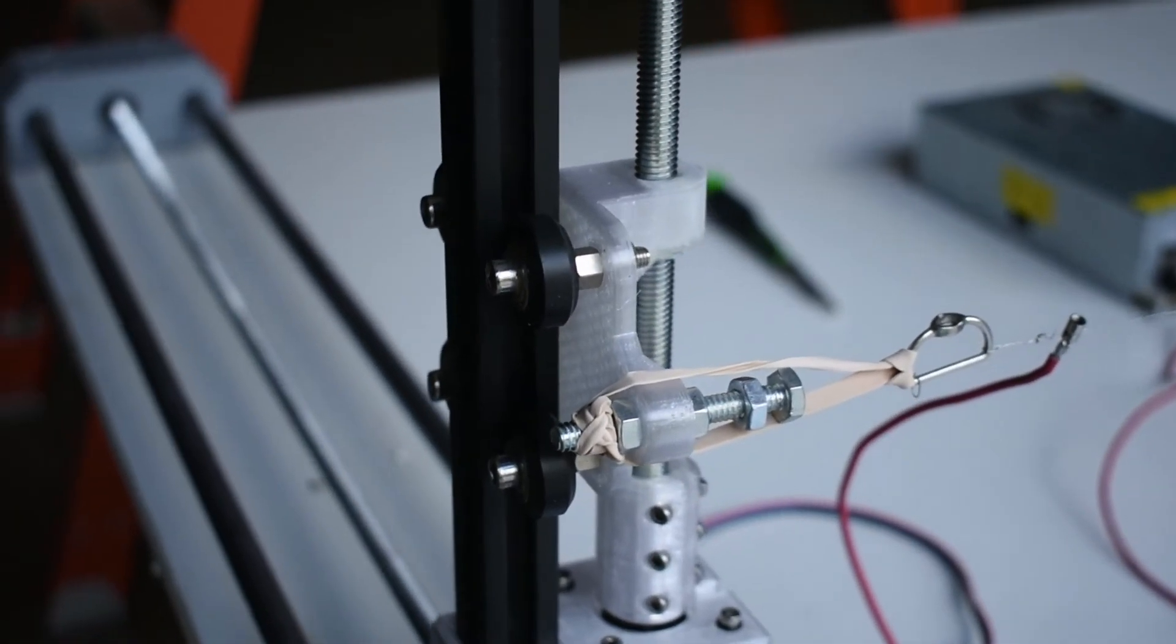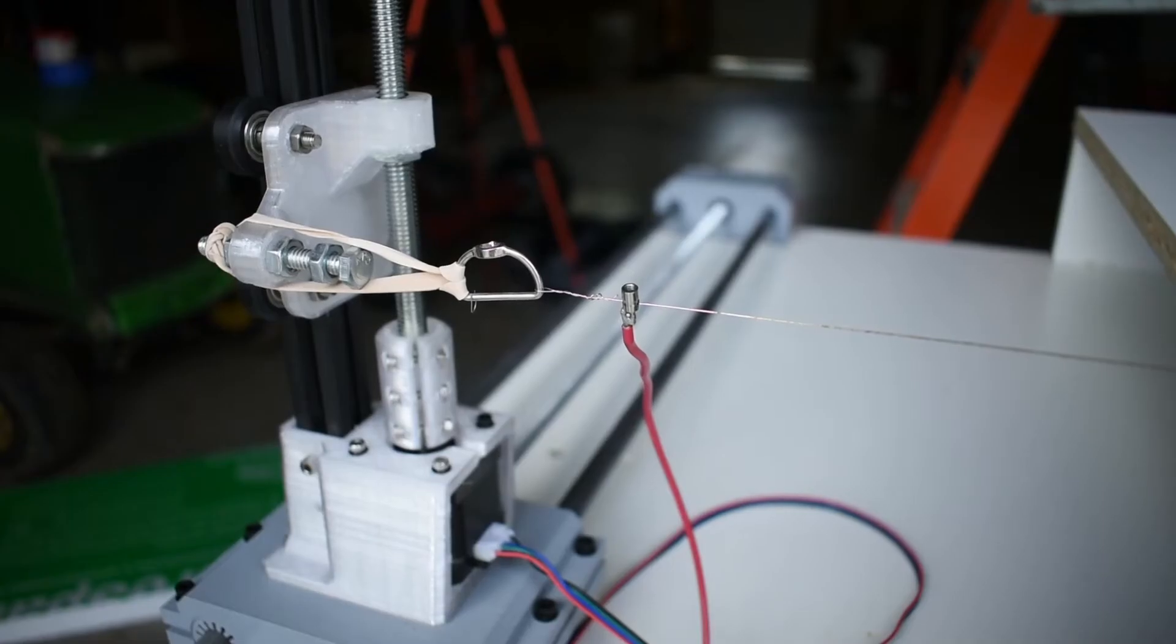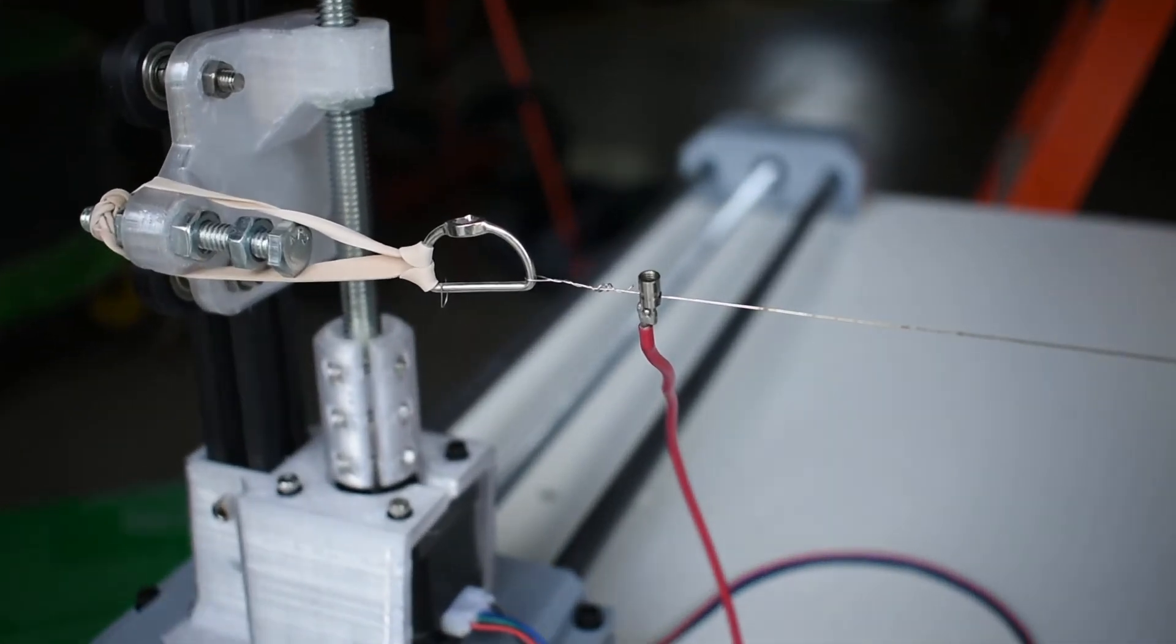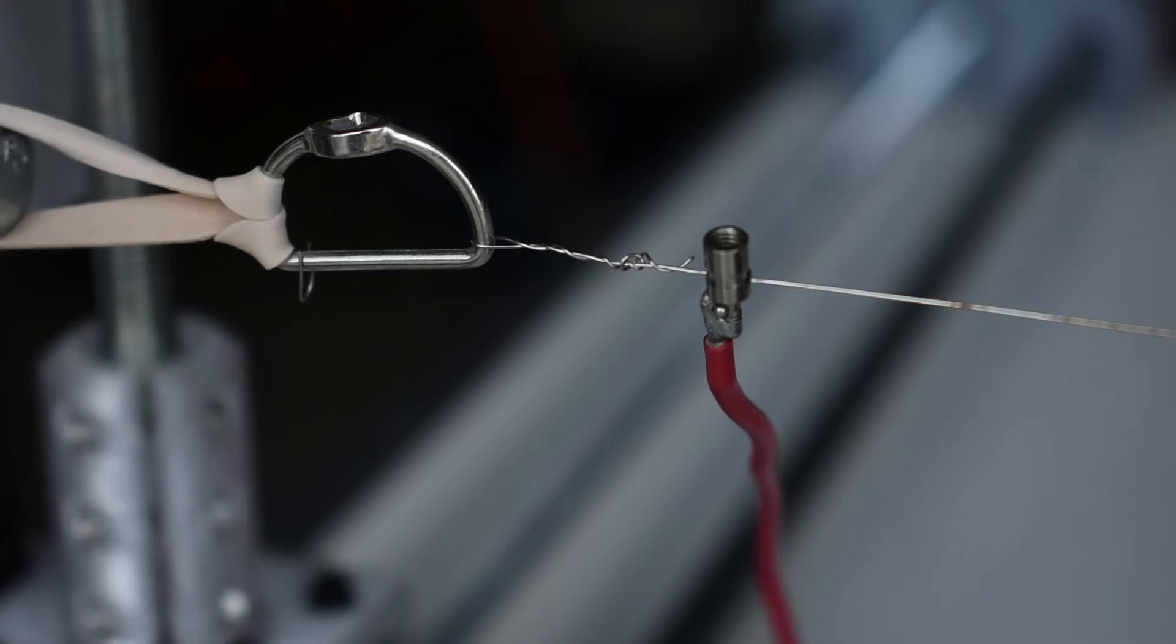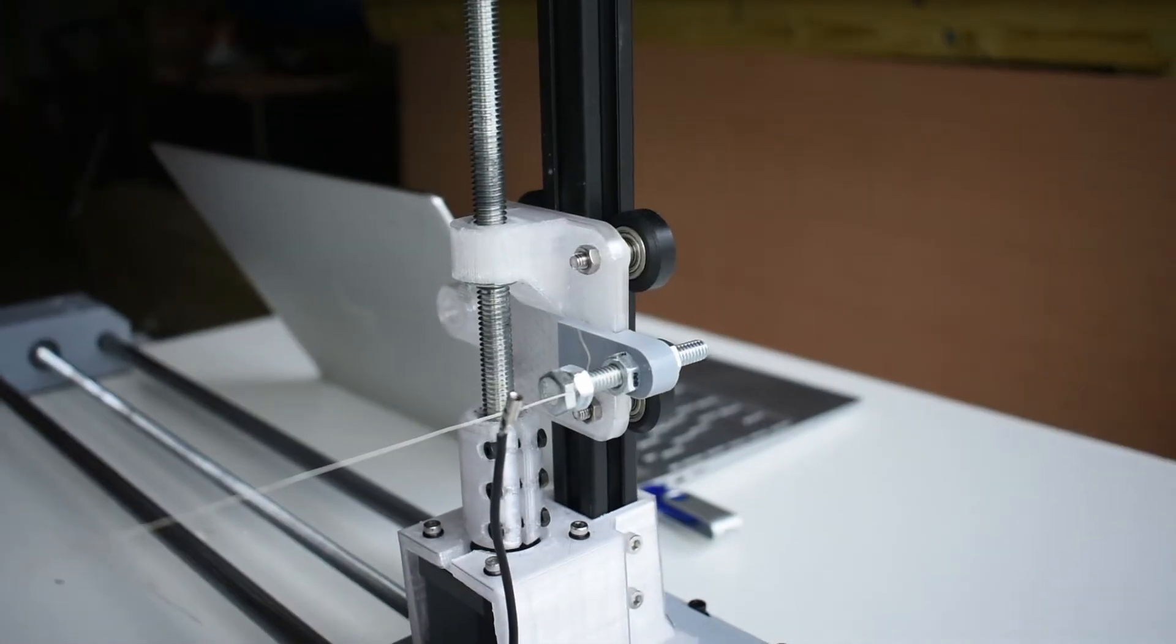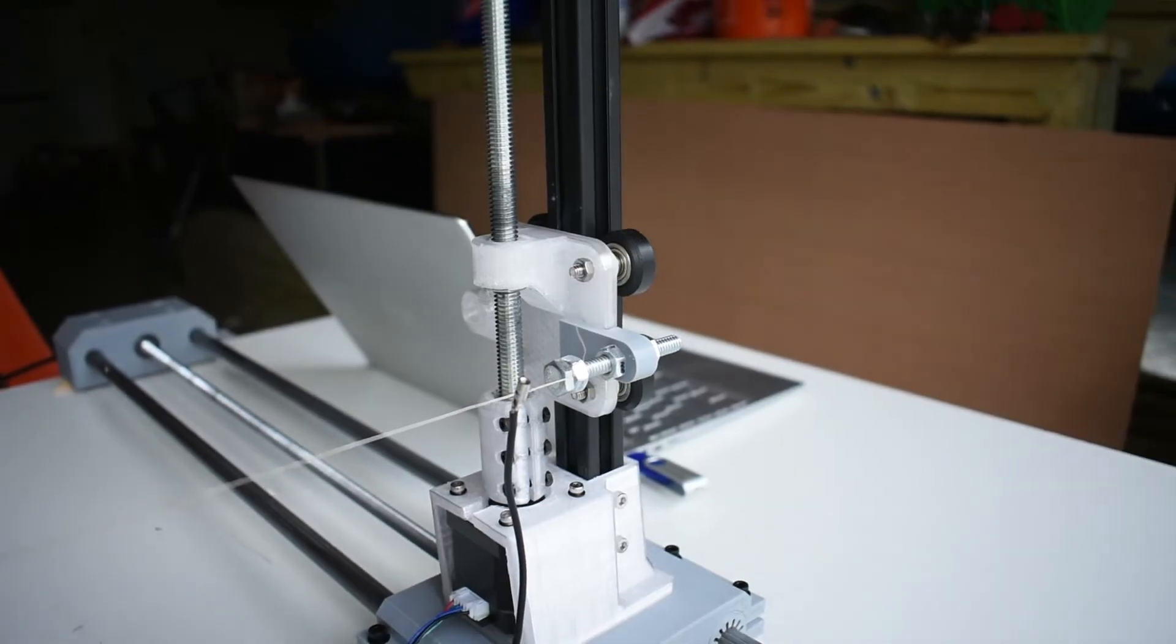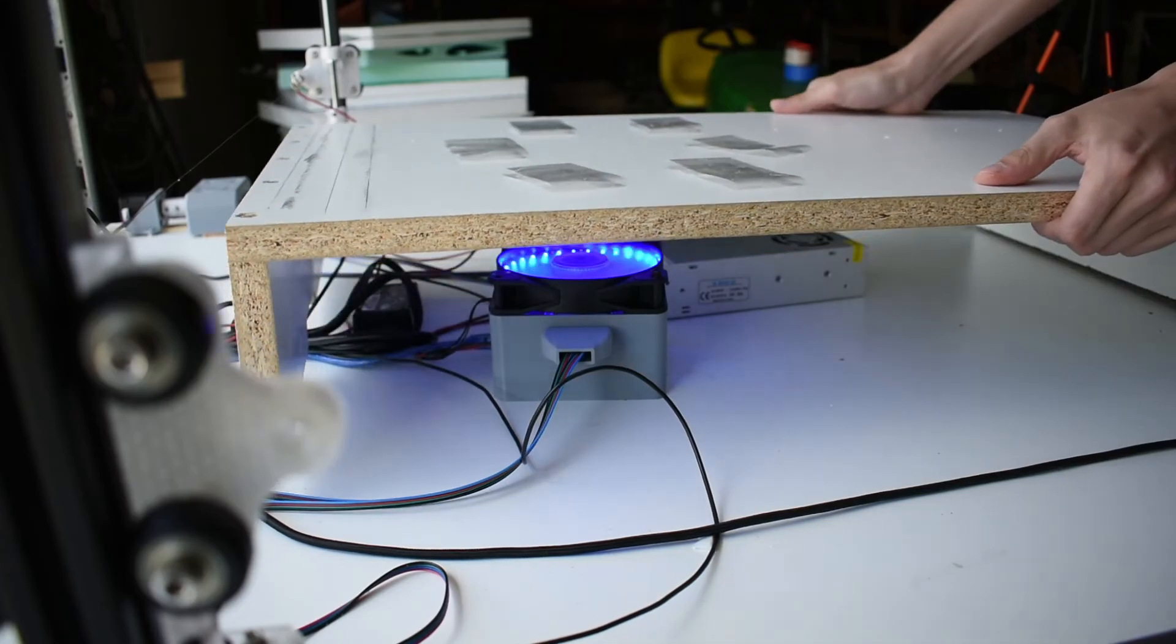The hot wire is made from 28-gauge nichrome wire, and it's attached at one end via a rubber band, so that it can stretch when it's cutting tapers. The power to the wire is supplied through these connectors right here. They're meant for RC-plane servo linkages, but they work great for heating up the wire. So all the electronics are housed underneath this raised cutting platform with some incredible cable management.